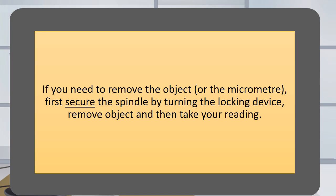If you need to remove the object or the micrometer, first secure the spindle by turning the locking device. Remove the object and then take your reading.